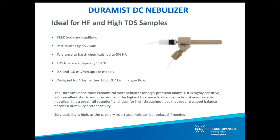The next nebulizer is our Duramis concentric nebulizer — the first of our inert nebulizers. The Duramis is made from PEEK and is our most economical inert nebulizer for high precision analysis. It's highly sensitive with excellent short-term precision and has the highest tolerance to dissolved solids of any concentric nebulizer. It's also a great all-rounder, ideal for high-throughput labs requiring a good balance between durability and sensitivity, especially for labs not interested in using a glass or quartz nebulizer. A unique feature is that the capillary insert assembly can be replaced at about a third of the cost of a new nebulizer if you experience a blockage that cannot be cleaned.